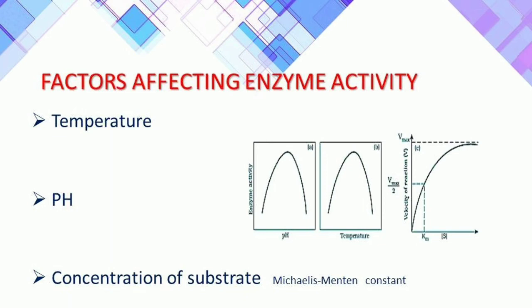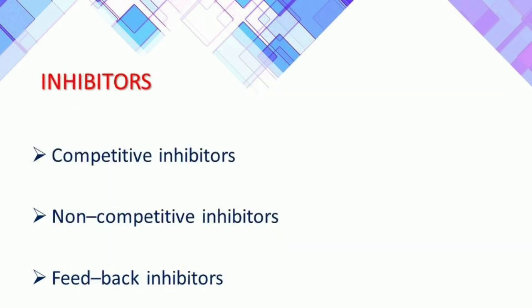Another factor is substrate concentration. With an increase in substrate concentration, the velocity of the enzymatic reaction rises at first, then reaches a maximum velocity where it does not increase further, because there are fewer enzyme molecules than substrate molecules. After saturation, there are no free enzyme molecules to bind additional substrate molecules. The substrate concentration required to cause half the maximal reaction rate is termed the Michaelis-Menten constant, Km.